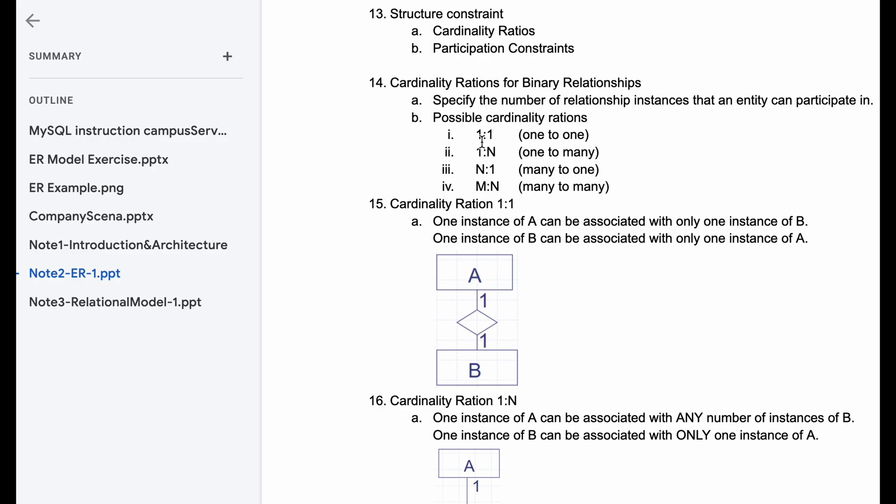These are our possible cardinality ratios. We have one-to-one, one-to-many, many-to-one. These two are basically the same. It just depends on how you look at them. They need to be written correctly. And then we have many-to-many.